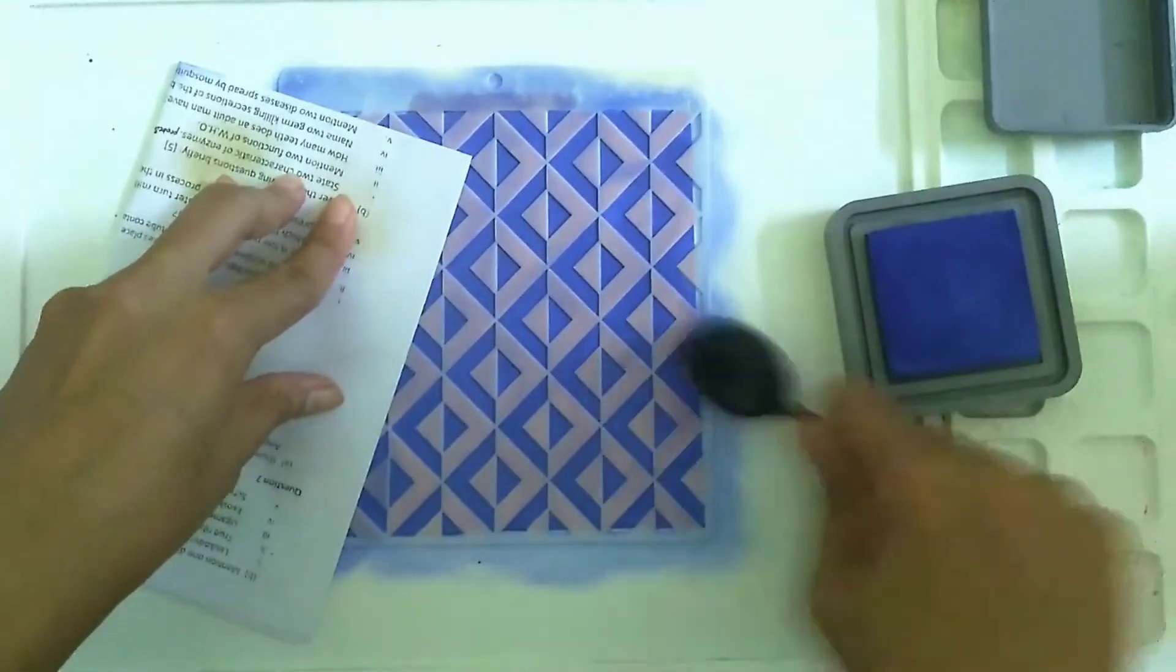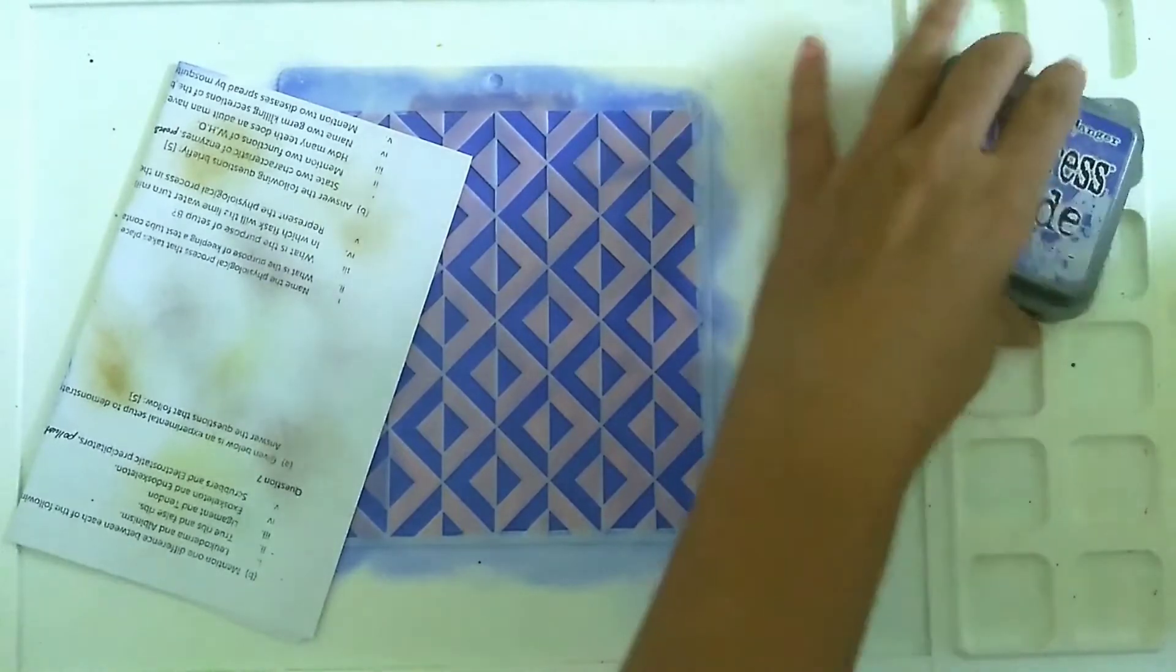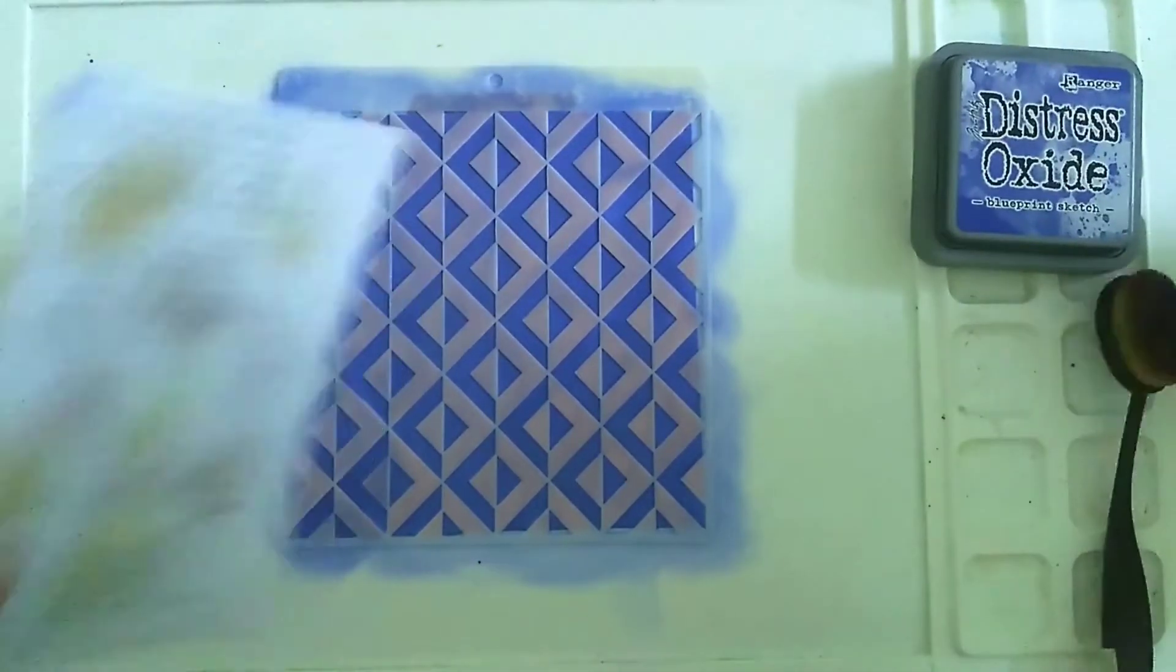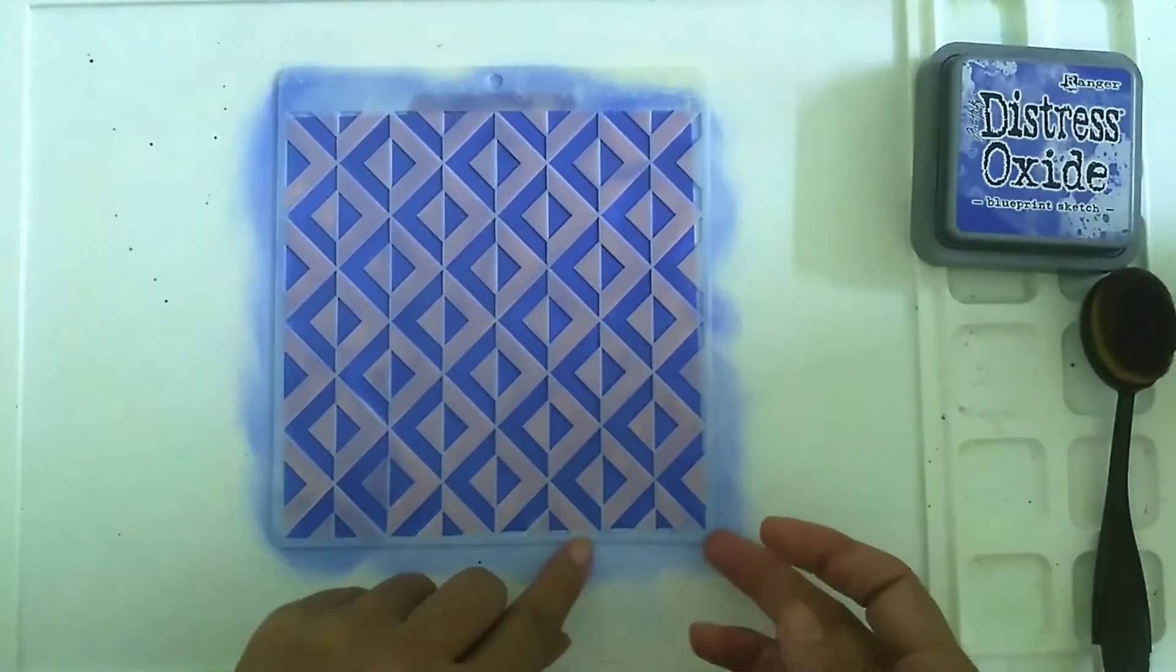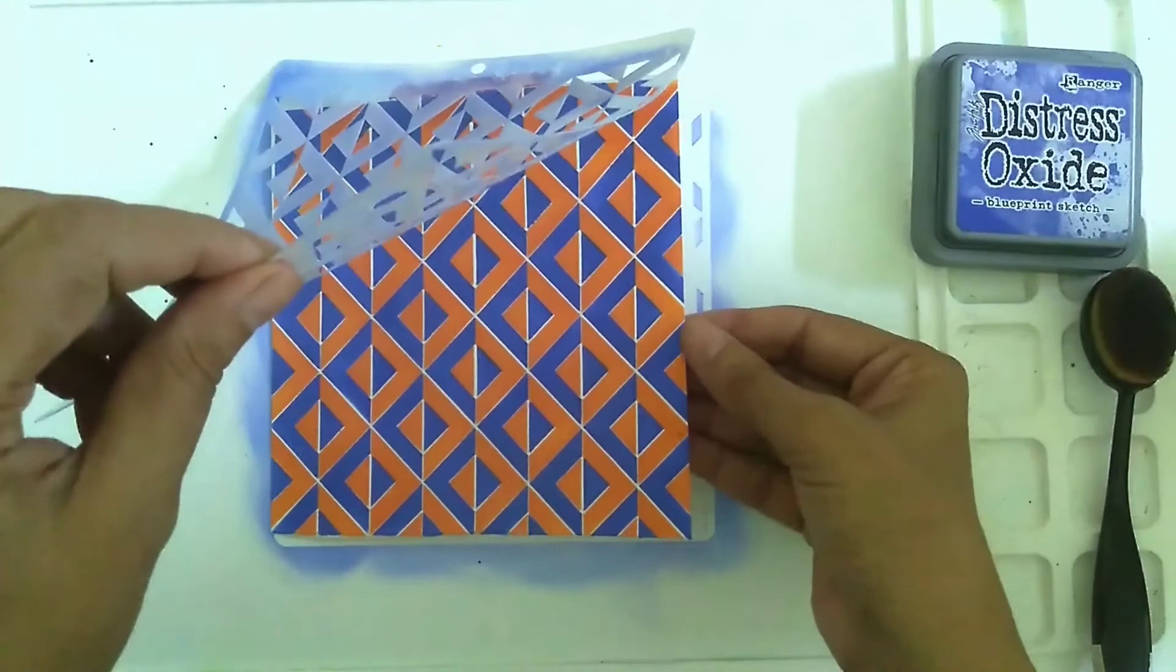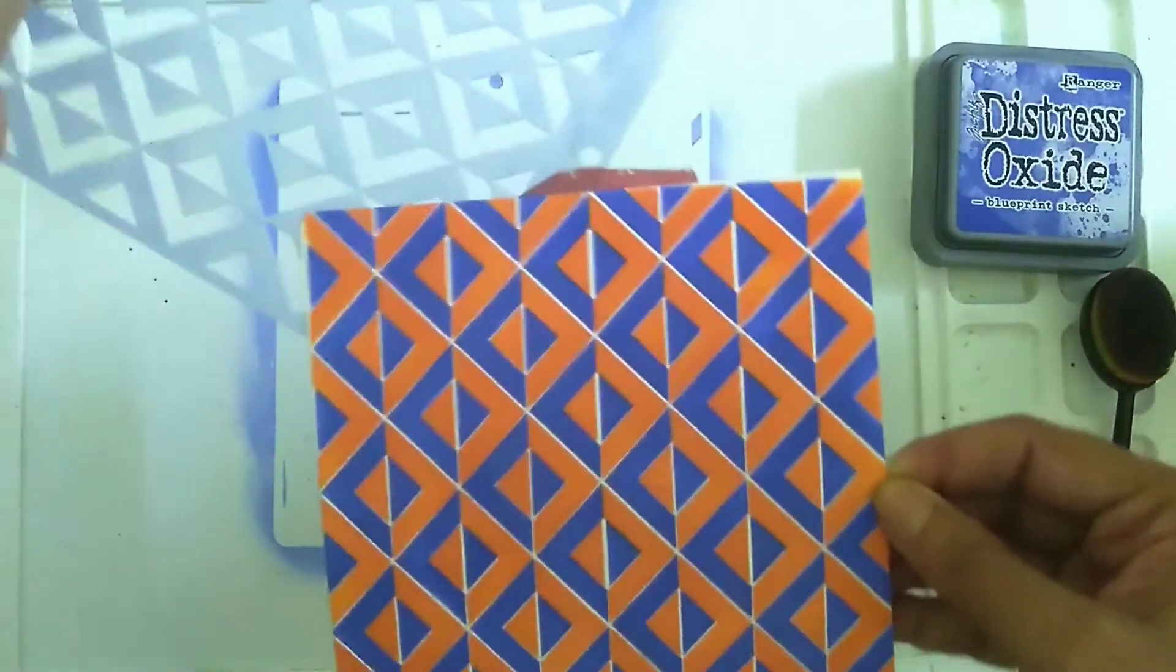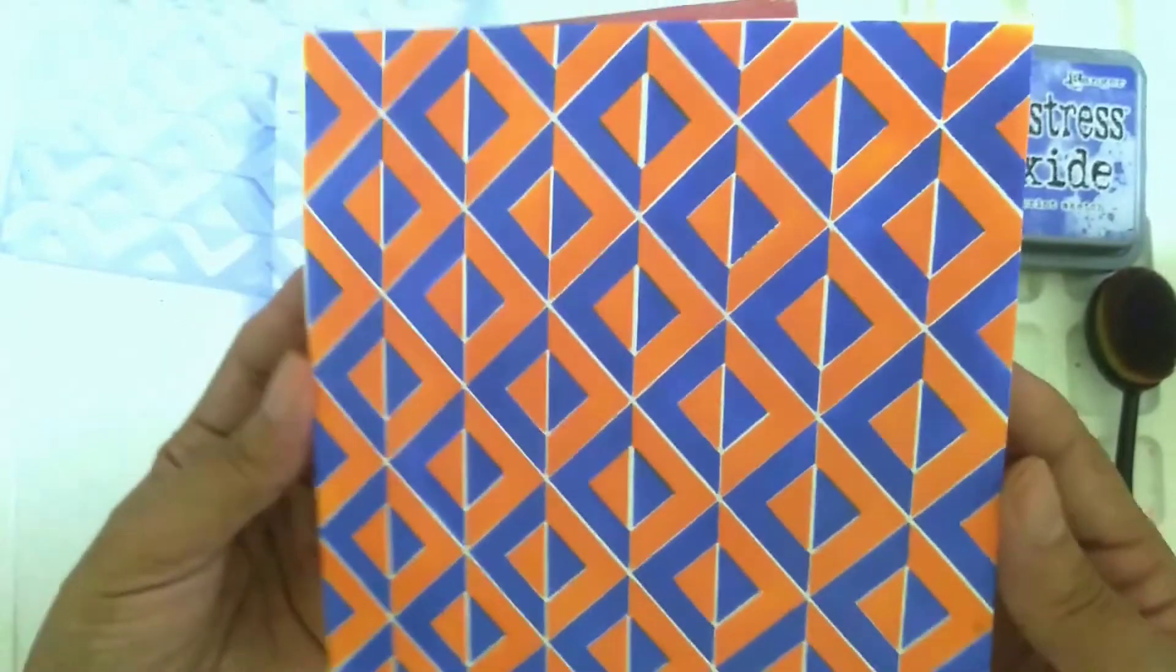Now our inking is done. Let's see what the background looks like. Gently lift up the stencil and there you have a very bold high contrast background which has a lovely 3D effect, and you can see how velvety the distress oxide inks look.